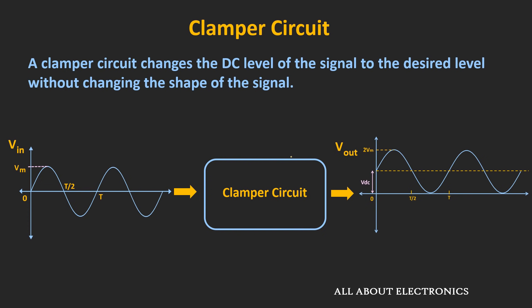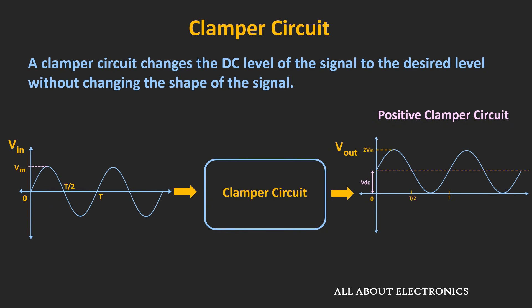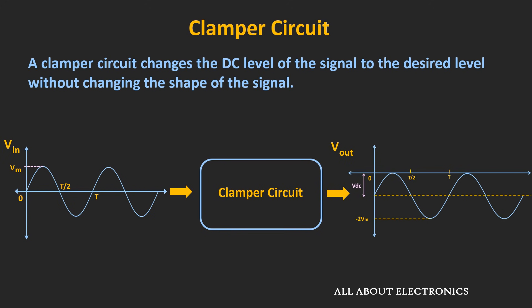As you can see in this diagram, this clamper circuit shifts the entire waveform upwards — or we can say towards the positive side. So this type of clamper circuit is known as the positive clamper circuit. Similarly, if the clamper circuit shifts the DC level towards the negative side, then such a clamper circuit is known as the negative clamper circuit.